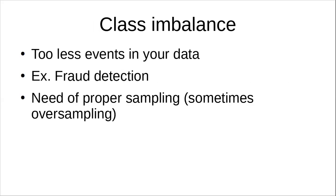Often people forget to treat multivariate outliers while building models. Then you have class imbalance — a classic problem in building machine learning models, especially where there are very few events in your training dataset. One such example is fraud detection, where you have a lot of non-fraud observations but very few fraud observations, and fraud is the event you want to predict, such as in credit card transactions.